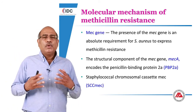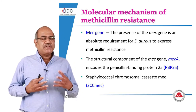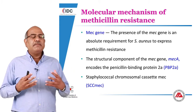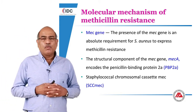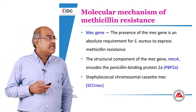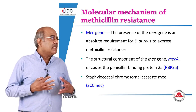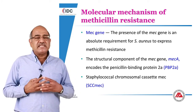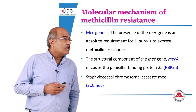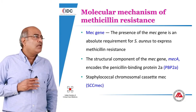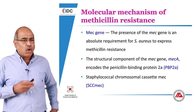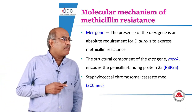Now, how do you differentiate between these two categories, and what determines the resistance for this particular group of Staph? There is basically a MEC gene, and the MEC gene is what determines or expresses the Methicillin resistance that one encounters with these organisms. There is a structural component of the MEC gene called MEC A, which encodes the Penicillin Binding Protein 2A.